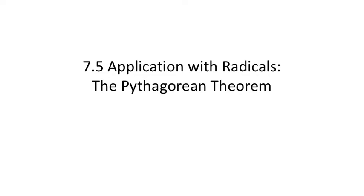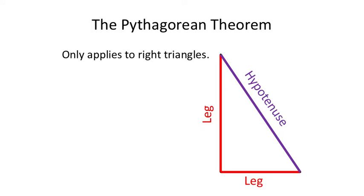Usually applications include word problems, and there are some word problems in this Pythagorean theorem section, but not a lot. The Pythagorean theorem only applies to right triangles, and when we say a right triangle, what we're really referring to is a 90-degree angle.